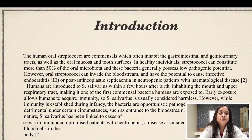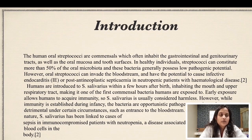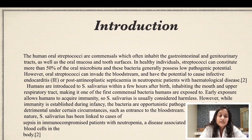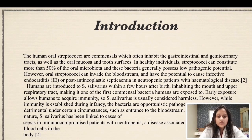Human streptococci are the normal commensals of the oral cavity, gastrointestinal tract, and also the genitourinary tract. As soon as a human is born, they are exposed to S. salivarius within a few hours, and hence develop acquired immunity against it, so it is considered harmless. However, considering its invasion into blood vessels, it is an extremely potent virulent organism. It can cause infective endocarditis or post anti-neoplastic septicemia in neutropenic patients with hematological disease, and sepsis in immunocompromised patients with neutropenia.